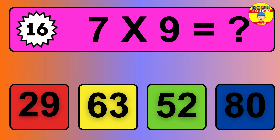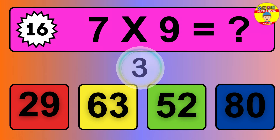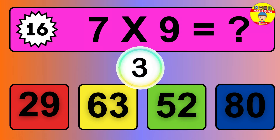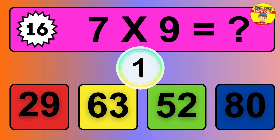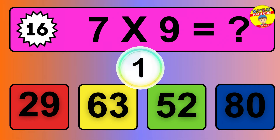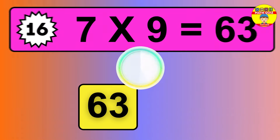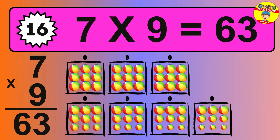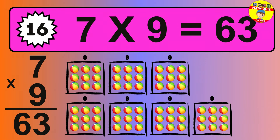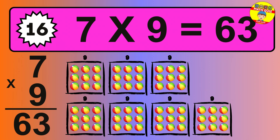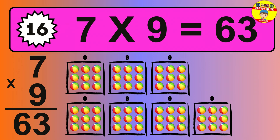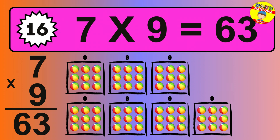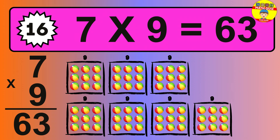Question 16. 7 times 9 equals what? The answer is 7 times 9 is 63. To calculate, we have 7 groups with 9 balls each one. So how many balls do we have? 63 balls.